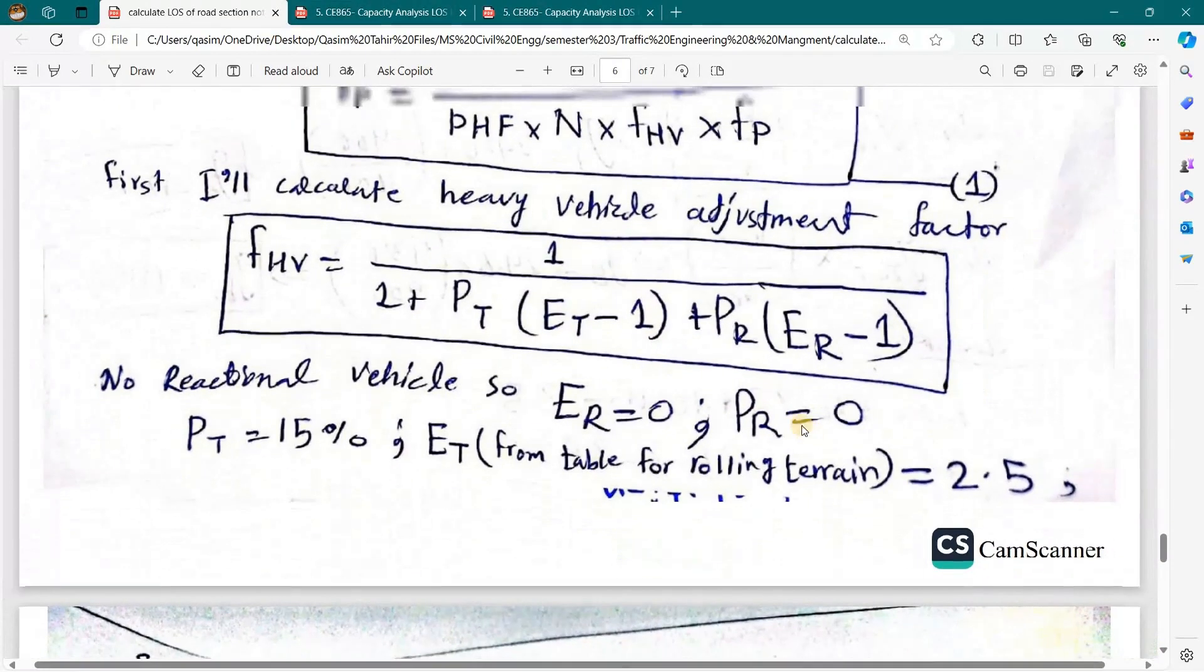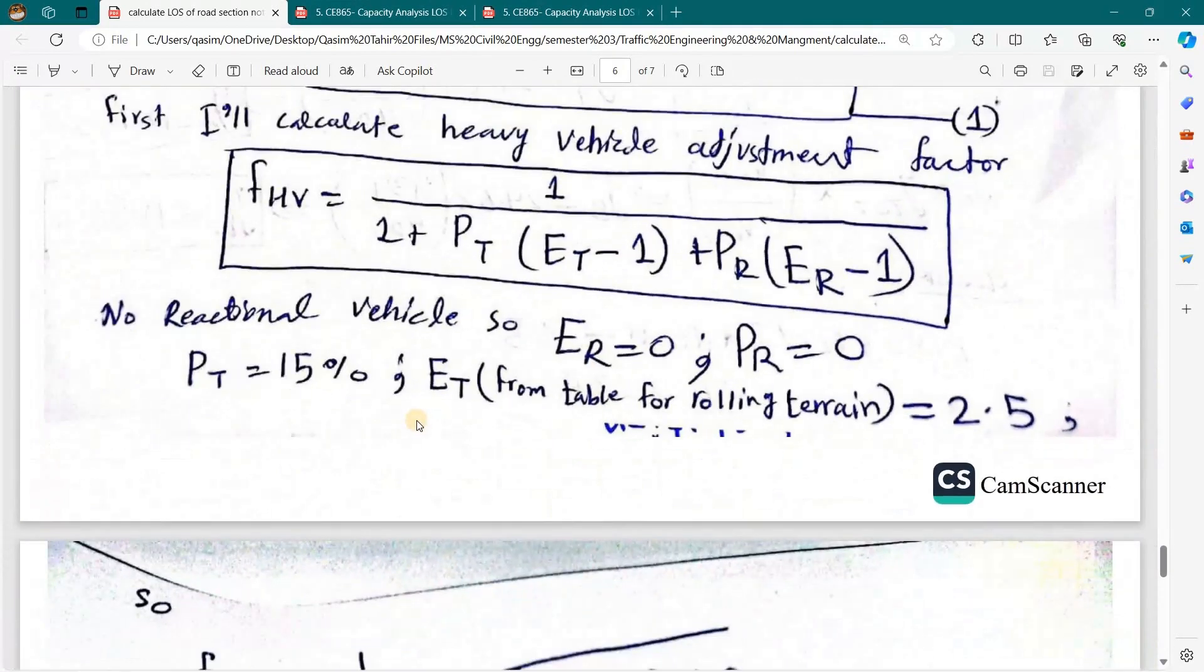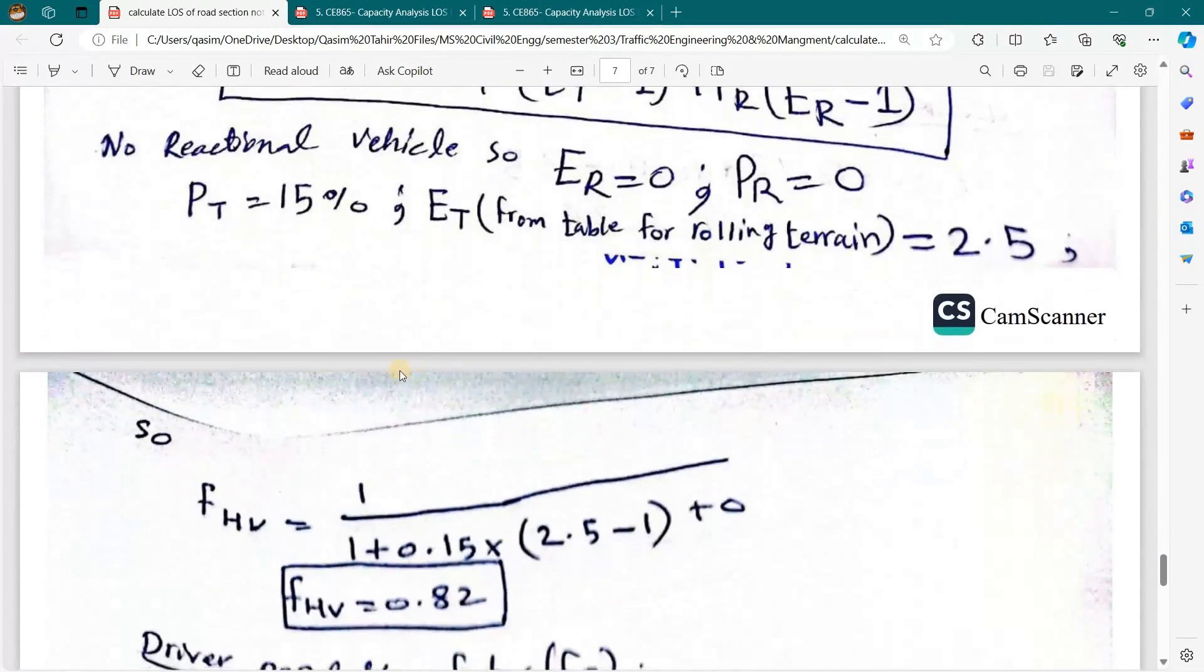Since we have passenger car recreational vehicles equal to 0, this factor will also become 0. ET is 2.5. Now we will put data into that formula to calculate fHV value.